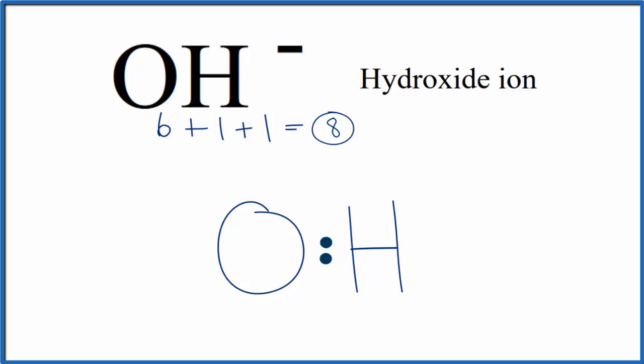Next, we'll go around and complete the octet on the oxygen. So we have 2, 4, 6, and then 8. We've completed the octet around the oxygen atom. It has 8 valence electrons, very stable. And we've used all 8 of our valence electrons.